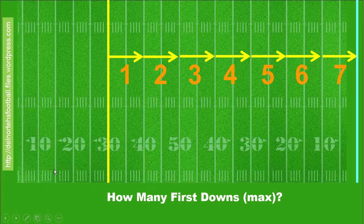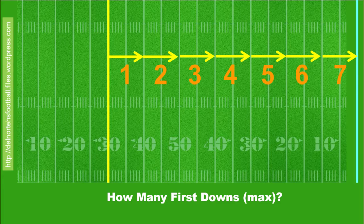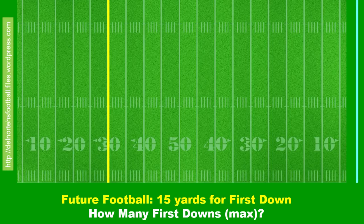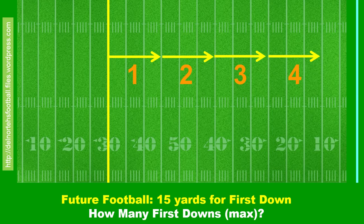In a distribution, when you use z-scores you're always measuring from the mean, either up or down, and you're measuring how many steps it takes to get from the mean to the place you're interested in. The size of the steps isn't first downs — it's standard deviations. The standard deviation can be bigger or smaller. If there were a larger standard deviation, it's like having a larger first down. If first downs were fifteen yards, then from the thirty to goal you'd need about four and two-thirds steps. You can have partial values, no problem.